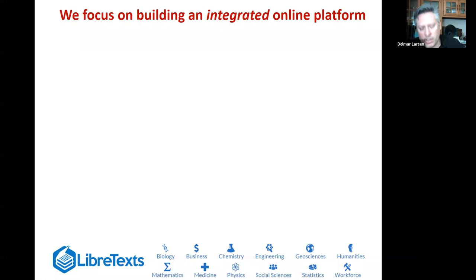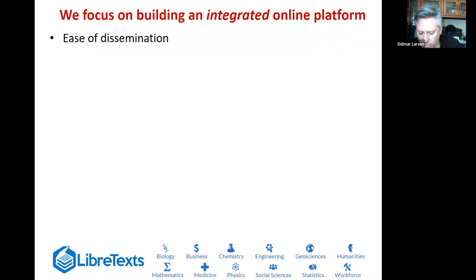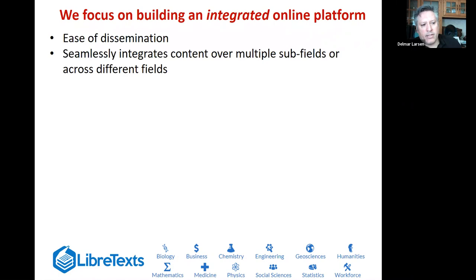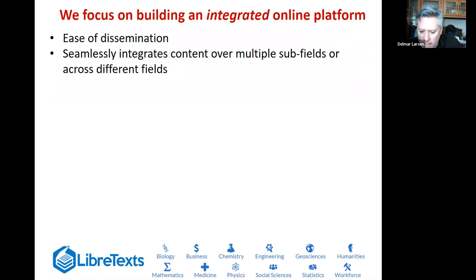Our approach is to build an integrated online platform, in contrast to more decentralized infrastructures. This provides ease of dissemination — once content is on our site, everyone with internet access has automatic access. We can integrate content across subfields: for example, mastering enzymology in the biology library requires chemical kinetics in the chemistry library, which requires separable differential equations in the math library. Understanding is much greater when you see how things are connected, and that is a key aspect of what we push.